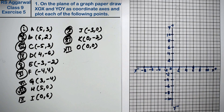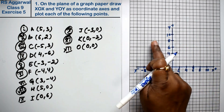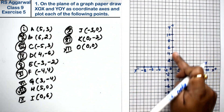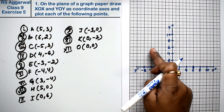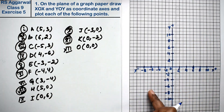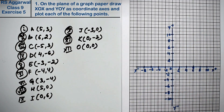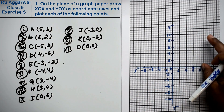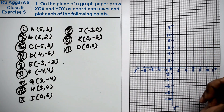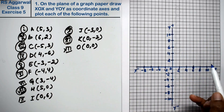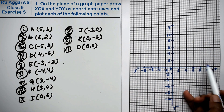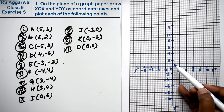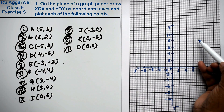This is the first quadrant, this is the second quadrant, this is the third quadrant, and this is the fourth quadrant. In the first quadrant, both values of x and y are positive — x is positive and y is positive.